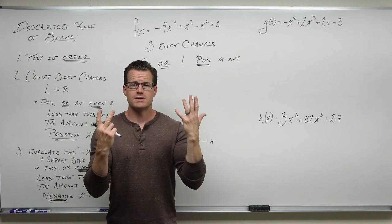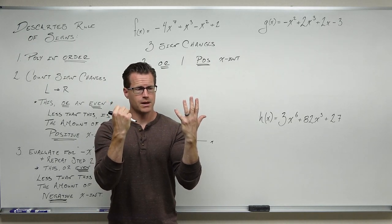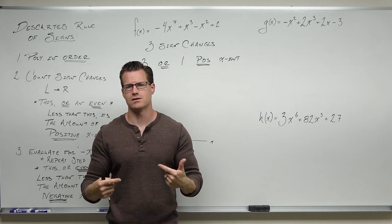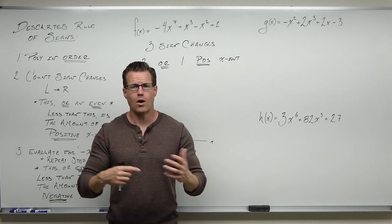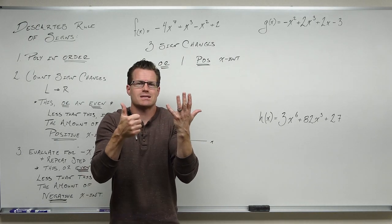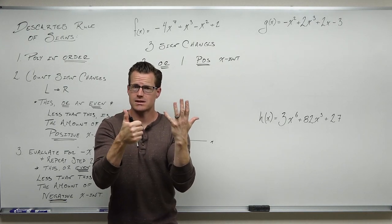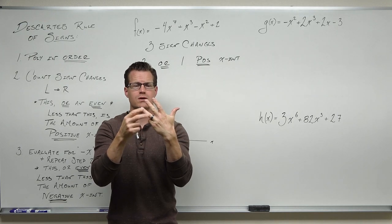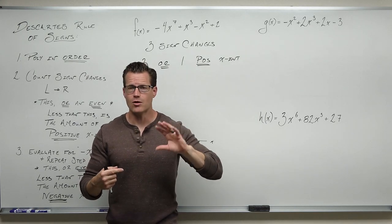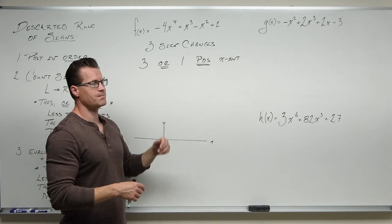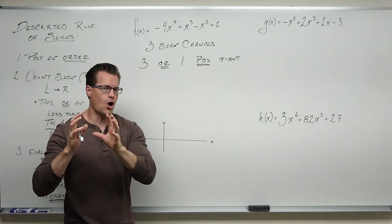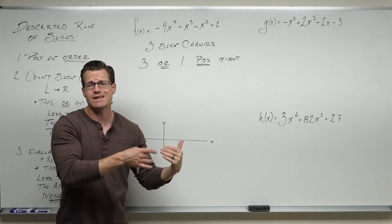Let's say you started with seven sign changes. There are either seven positive x-intercepts, or five, take away two, or three, take away two, or one. That's the potential number of positive x-intercepts. It's not going to be all of those — it's going to be one of those: either seven, five, three, or one. What if you had six sign changes? You'd have either six positive x-intercepts, or four, or two, or zero. You come up with a list of how many positive x-intercepts you could get.